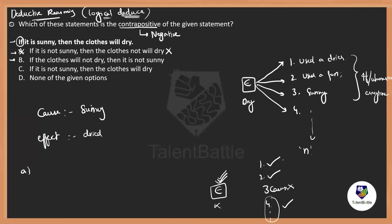The second statement says: 'if the clothes will not dry' — meaning the effect itself did not happen. Now, if the effect itself did not happen, is there any chance that at least one cause happened? No — all the causes would have not happened, which is why the effect did not happen. This is the contrapositive — the negative statement. Option B is correct.